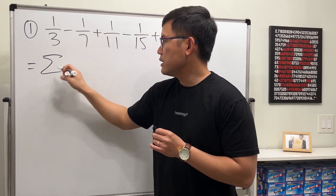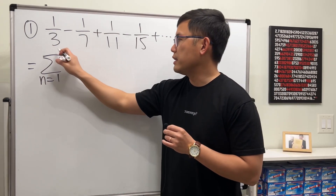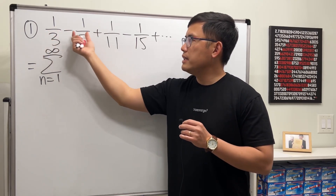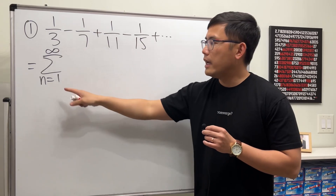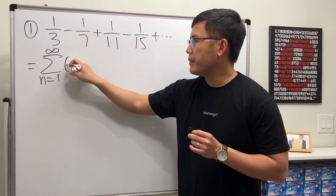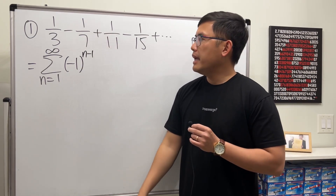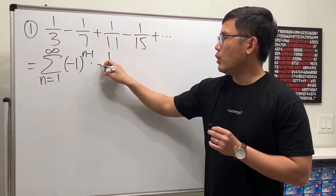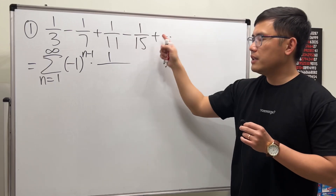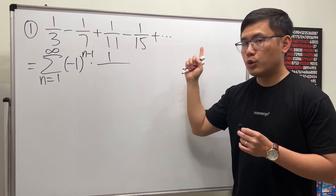We look at this, and let's say n starts with 1 to infinity. Now, this is alternating, and it starts with positive, negative, positive, negative, and so on. We start with n equals 1, so in that case we need a factor of negative 1 raised to the n minus 1 power. Then the rest is just 1 on top over 3, 7, 11, 15 — each time it goes up by 4.